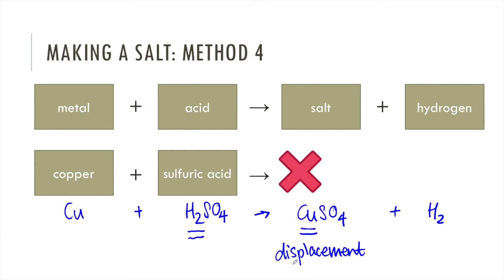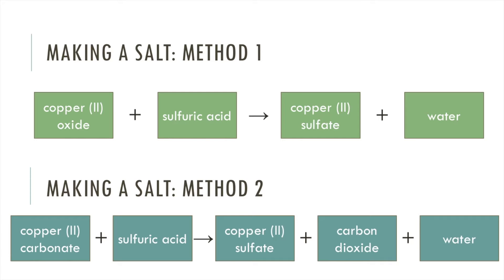Now the thing about displacement reactions is that the thing that displaces the hydrogen has to be more reactive than hydrogen. It has to be higher on the reactivity series to be able to do this. Copper is less reactive than hydrogen, so it cannot displace hydrogen, and that's why this reaction doesn't go ahead. So these are the two practical methods that you could be asked about in an exam. I'm going to focus on method one for simplicity, but you can apply all practical steps to method two.